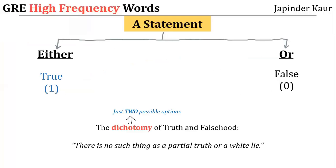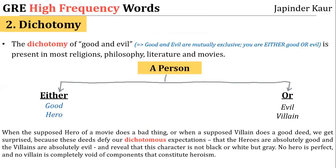Next, there are people who believe that a statement can be either true or false — you are either telling the truth or lying. Such people believe in the dichotomy of truth and falsehood. They believe that truth can have only binary values, one or zero, and do not think that something can be partially true or that truth can have shades of gray.